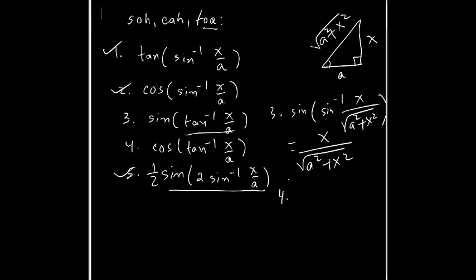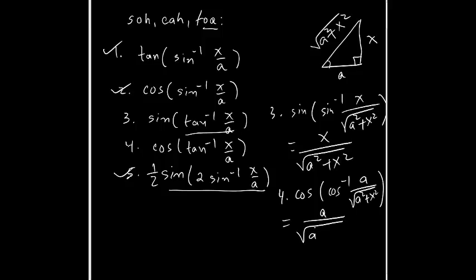Problem four is cosine of tan inverse x over a. Using the same triangle, cosine is adjacent over hypotenuse, so we get cosine inverse of a over √(a² + x²). Cosine and cosine inverse cancel, giving a over √(a² + x²). It is simple — with basic knowledge you can easily get your solutions.